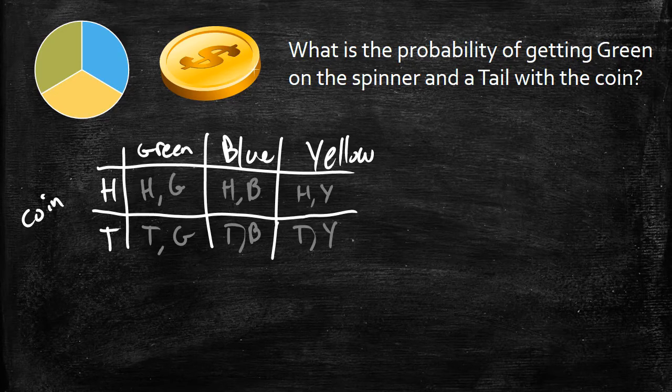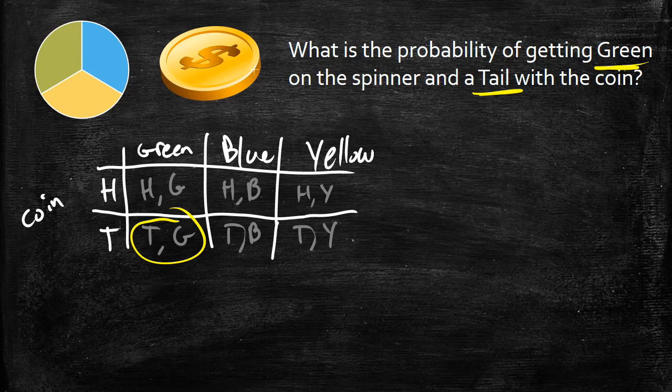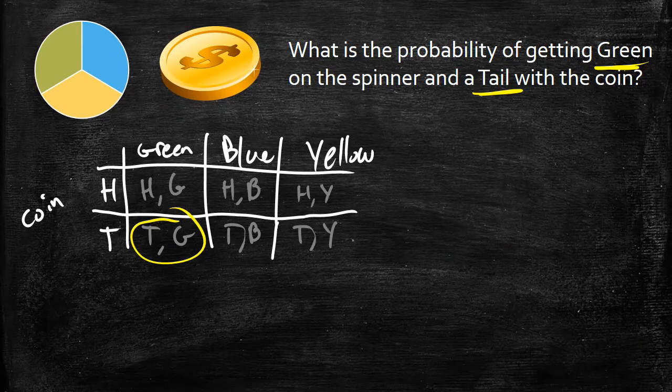So just looking at this, I can figure out really quickly my probability of getting a green and a tails. I can see that right here—green tails—and I know it's a 1 over 6 here because I got six possible outcomes.